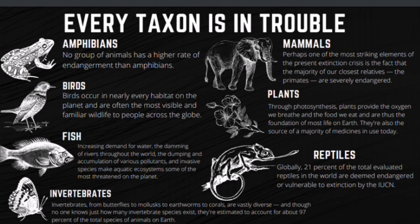Birds occur in nearly every habitat on the planet and are often the most visible and familiar wildlife to people. However, birds are also declining in population across most habitats, confirming that profound changes are occurring on our planet in response to human activities. Globally, it is estimated that 12 percent of the known 9,865 bird species are now considered threatened, with 192 species — or 2 percent — facing an extremely high risk of extinction in the wild. Habitat loss and degradation have caused most of the bird declines, but invasive species and capture by collectors also play a big role.